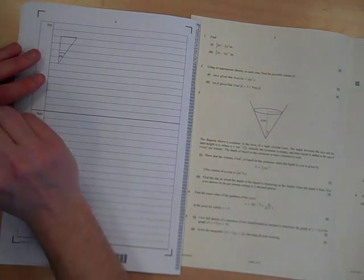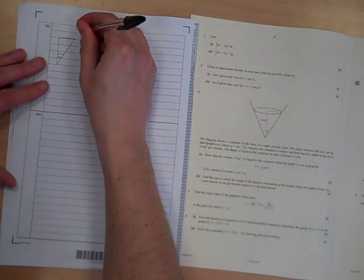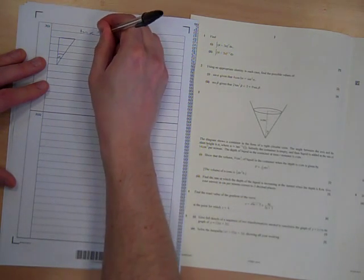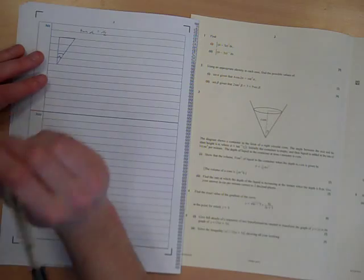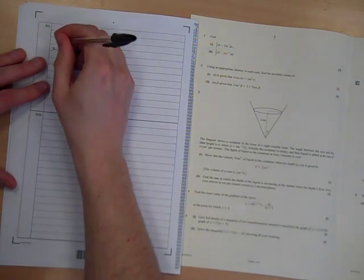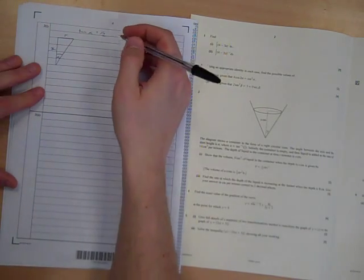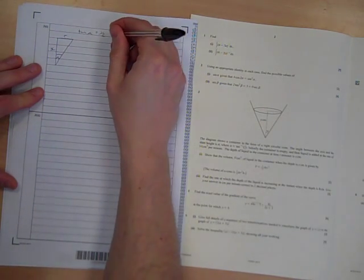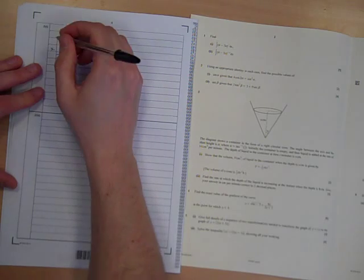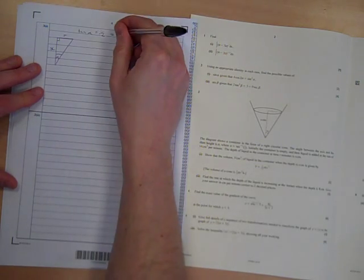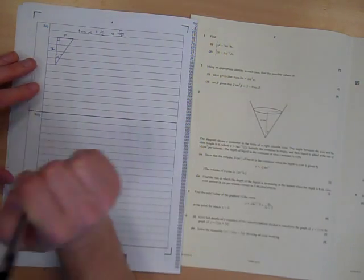And if we've got that tan alpha is a half... Well, according to what we've got here, there's x and there's the radius of our liquid. Tan alpha is opposite over adjacent. It's r over x.